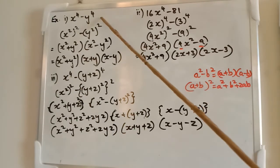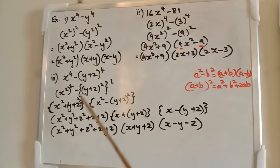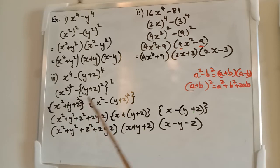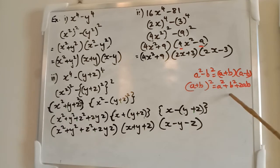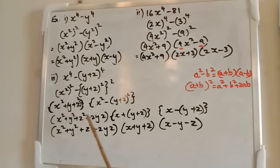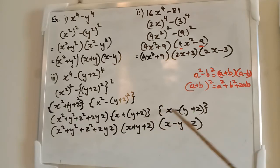Next question — another modification of the same first question. x raised to the power of 4 minus y plus z whole raised to the power of 4. That will be x square whole square minus y plus z whole square raised to the power of 2. That would be x square plus y plus z whole square into x square minus y plus z whole square. We use the formula a plus b whole square equals a square plus b square plus 2ab. Substituting y plus z, you get y square plus z square plus 2yz. So the first factor is x square plus y plus z whole square, giving x plus y plus z into x minus y plus z.